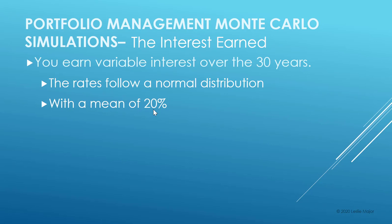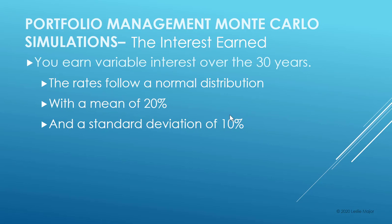Let's let the mean be 20% — this is quite high, by the way — with a standard deviation of 10%. With a high standard deviation there's a large fluctuation: we can easily earn up to 30%, or we could lose 10% in a bad year.